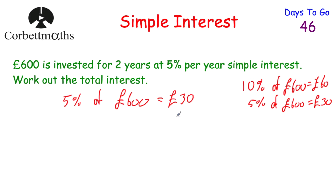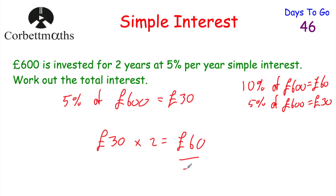So with simple interest, £30 is earned every single year. It's invested for two years, so it'll earn £30 in the first year and £30 in the second year. To work out the total interest, we take our £30 and multiply by the number of years, which is 2. £30 multiplied by 2 equals £60. So it earns £60 interest in total. If the question asked for the total money in the account after two years, that would be £660, but this question just asks for the total interest — and that's £60.